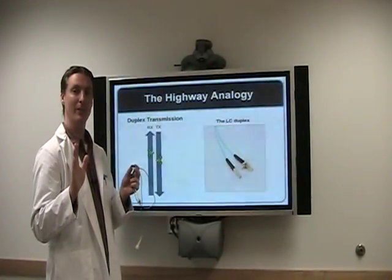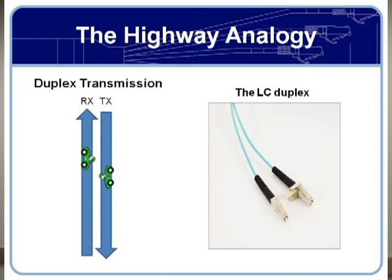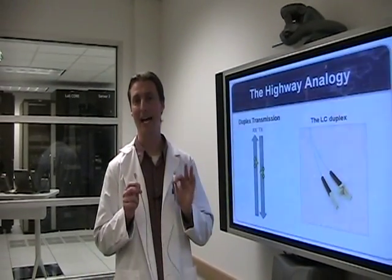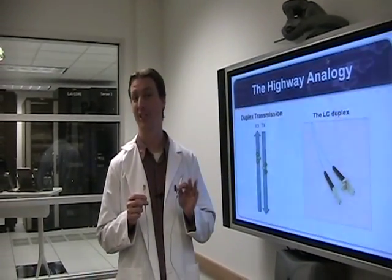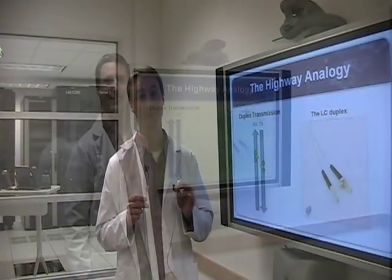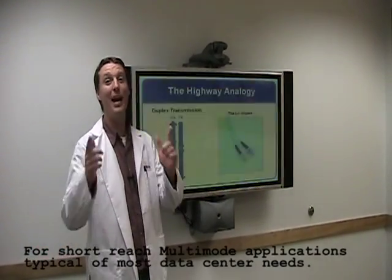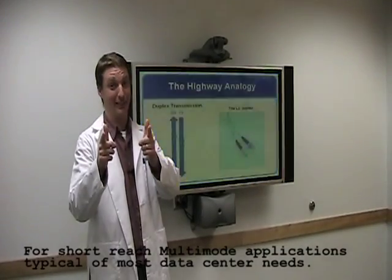Serial transmission is much like a two-lane highway. From the transceiver, you have send traffic going one way, and you have receive traffic going the other way. But at the current state of optical technologies, you can't get much past 10 gigabit. So how do we go faster? The answer is parallel optics.